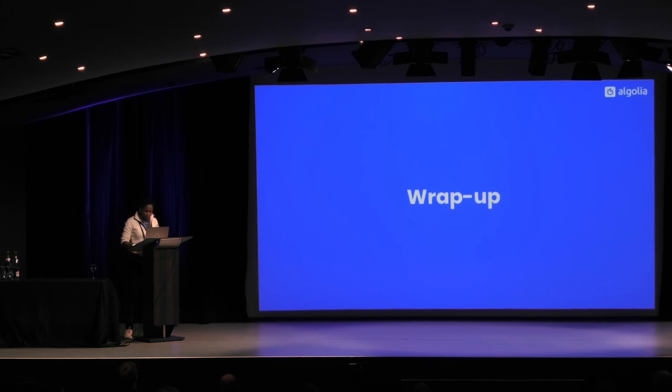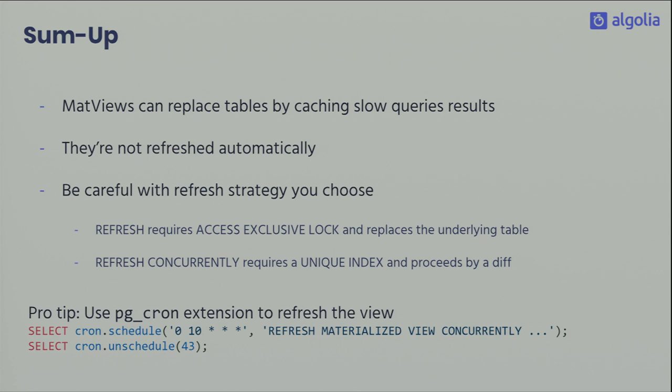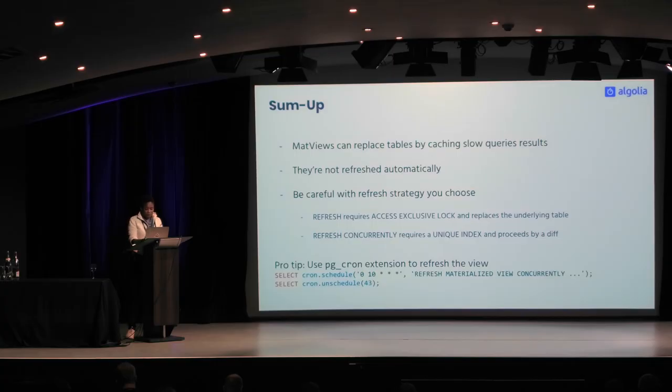To wrap up: a materialized view can replace a table if you don't have a real-time constraint. Other DBMSes do refresh automatically; PostgreSQL doesn't, but at least you can choose between two refresh strategies. A great tool for automating this is pg_cron — it's an extension you install, use cron syntax to schedule the refresh query, and unschedule with the task ID just as easily.